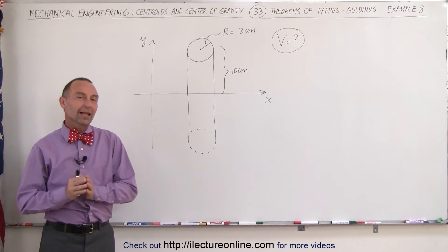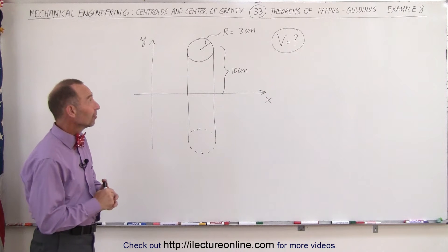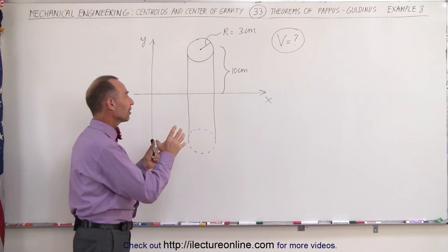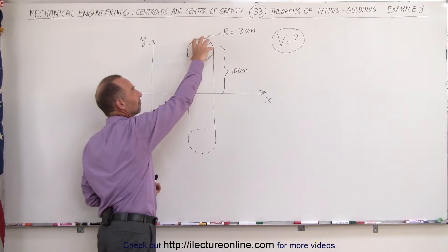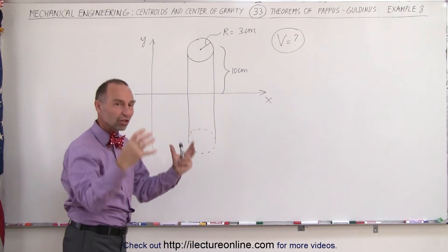Welcome to ElectronLine. Now we're going to try to find the volume, using the theorem of Pappas Gildenas, of an object that's created when we take a circle area and revolve it around the x-axis. When we do that we get a donut shaped object.